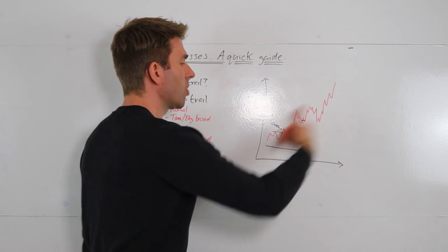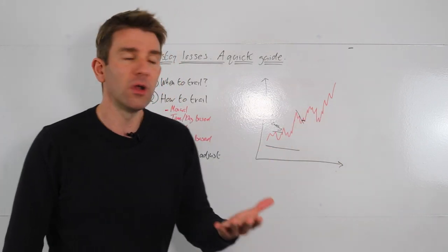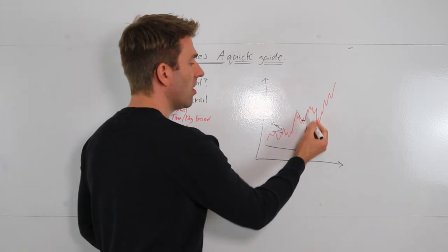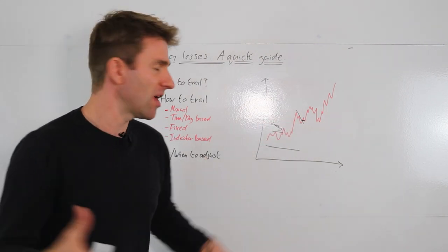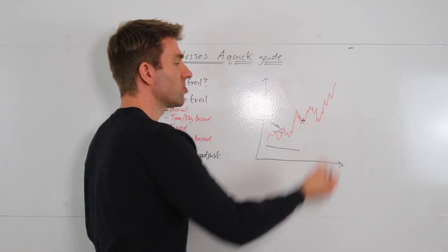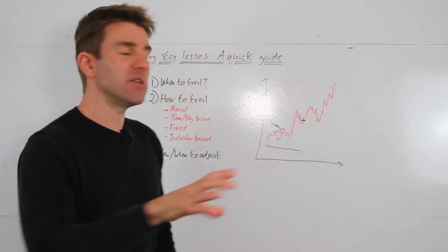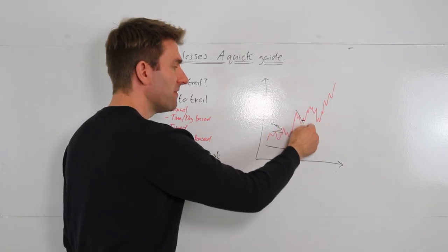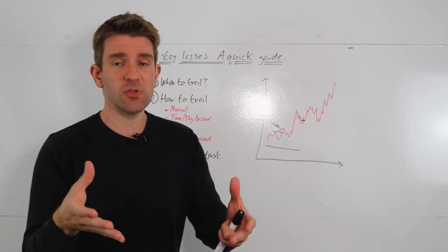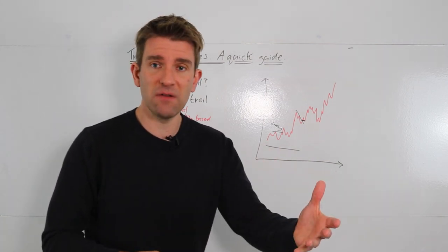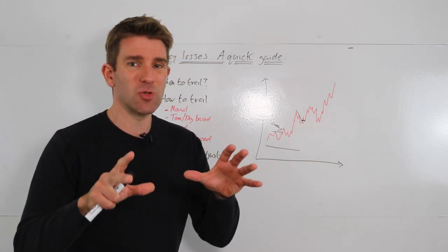The first way to trail is manual — you literally go right and bring your stop up every time you break to a new high. Some specific binary rule: you move the stop, ratchet it up by 50 pips, two dollars, whatever asset you're trading. The danger is sometimes price moves to a new high and fakes out a little bit. Different assets behave very differently — are you in a trending environment, a momentum ignition explosion, or a mean reversion environment? You need to take that into account.